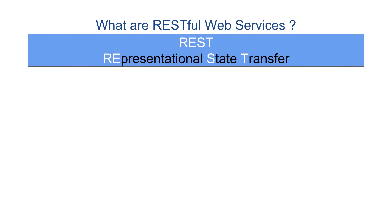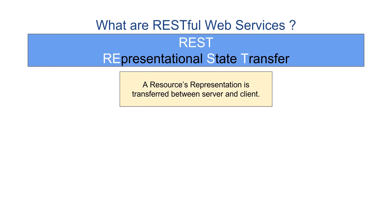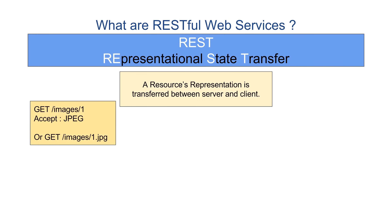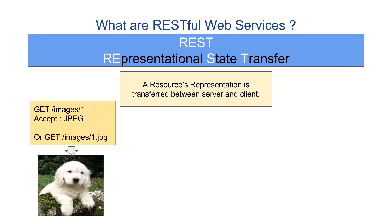Now we can understand what Representational State Transfer means. Every resource can be represented in multiple ways — a resource may have a representation in XML format or JSON format. Whenever there is a request from the client, the representation of the current state of the resource is transferred between client and server. For example, if I do a GET on the images resource and request image one with a JPG representation, I will get a response with the JPG representation of that resource.